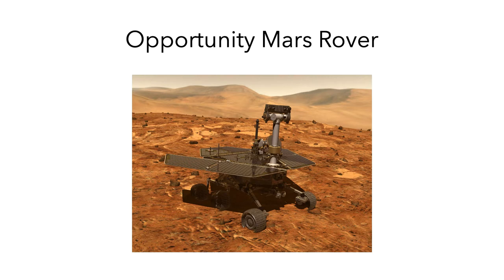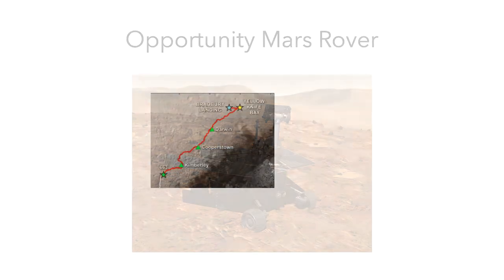It is powered by solar cells. As the rover travels across the Martian surface, it kicks up dust which accumulates on its solar cells. Once the solar panels have accumulated 200 milligrams of dust, they'll stop providing enough power for the rover to move.